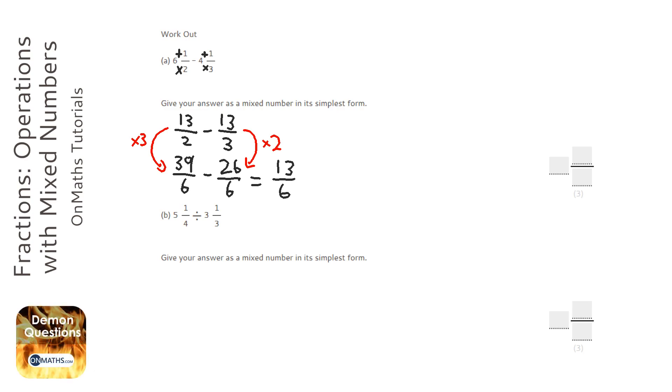So we need to make it a mixed number in its simplest form. So we ask ourselves, how many sixes can I take away from thirteen? I can take away two whole ones. How many remainders do I have left? Six times two is twelve, so it's going to be one remainder. And the bottom of the fraction stays the same. So it's going to be two and one-sixth.